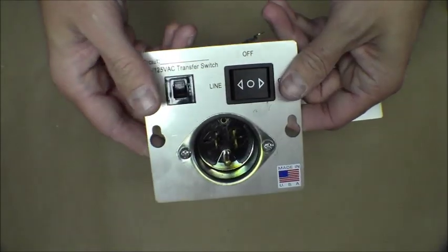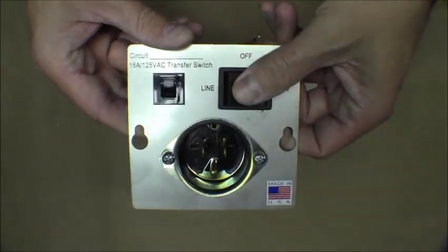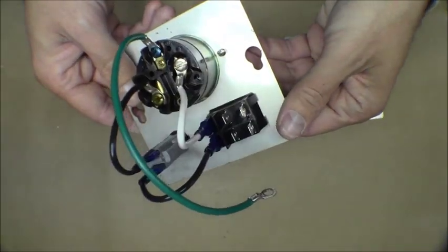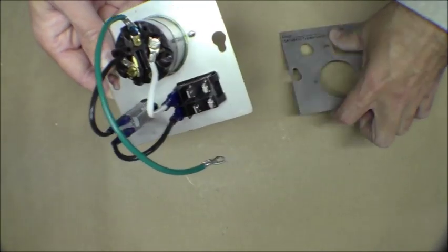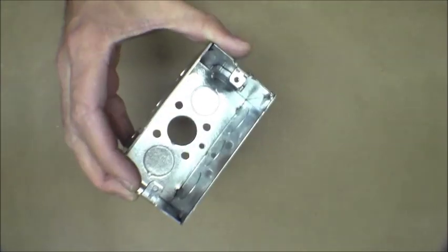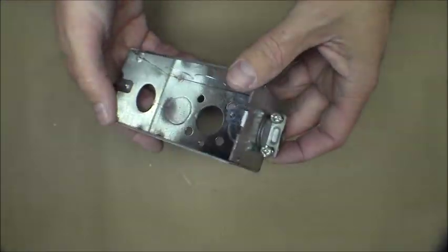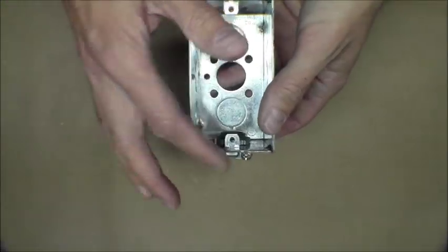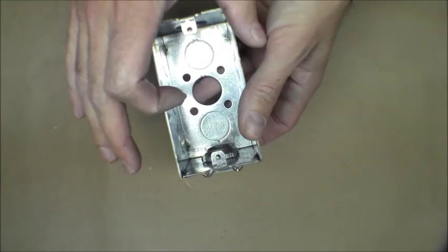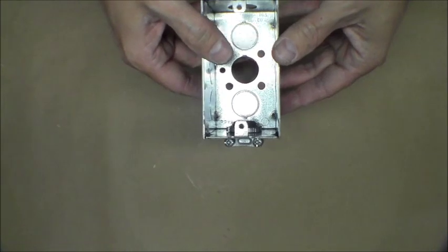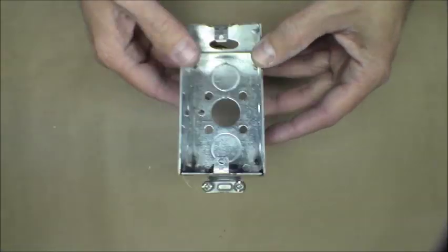What we're going to do is use the switch here to make ourselves a really simple transfer switch using just a standard junction box, like a light switch box. Now this is called a single gang. It's just the single width. You can also get a double gang one, but this is really all you need.